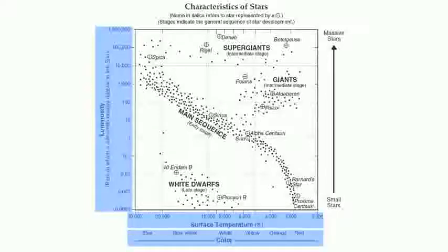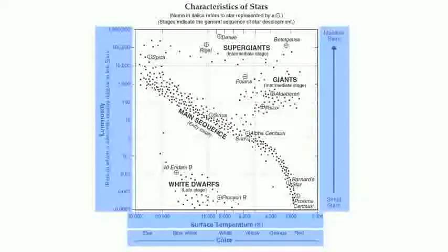Each temperature is going to correspond with a color. Your red stars tend to be very cool, and your blue stars tend to be very hot. On the right-hand side, there's also a scale in terms of size — small stars are going to be on the bottom, and big stars are going to be on the top.